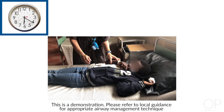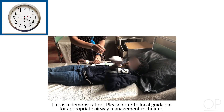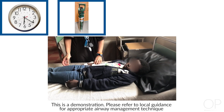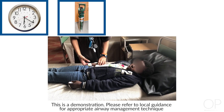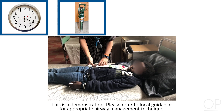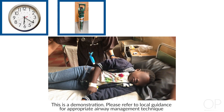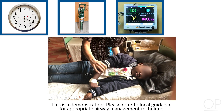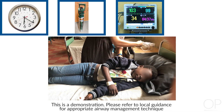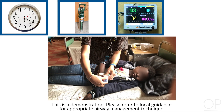At the onset of seizure, start timing while you assess the airway, breathing, and circulation of the patient. Administer oxygen if available. Place the child on his or her side, loosen clothing, and do not place anything in the mouth. Place the patient on a monitor if available, or obtain vital signs regularly. Start obtaining intravenous access.